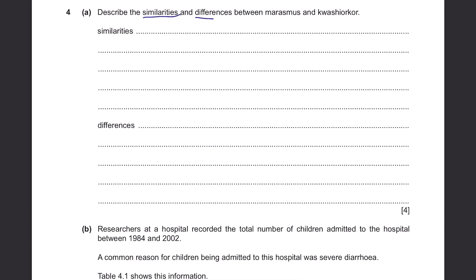Describe the similarities and differences between marasmus and kwashiorkor. Both are similar in the sense that they're both types of malnutrition caused by a certain deficiency such as protein. They primarily affect children, and the symptoms are very similar — diarrhea, poor growth, dry skin, anemia, and so on.